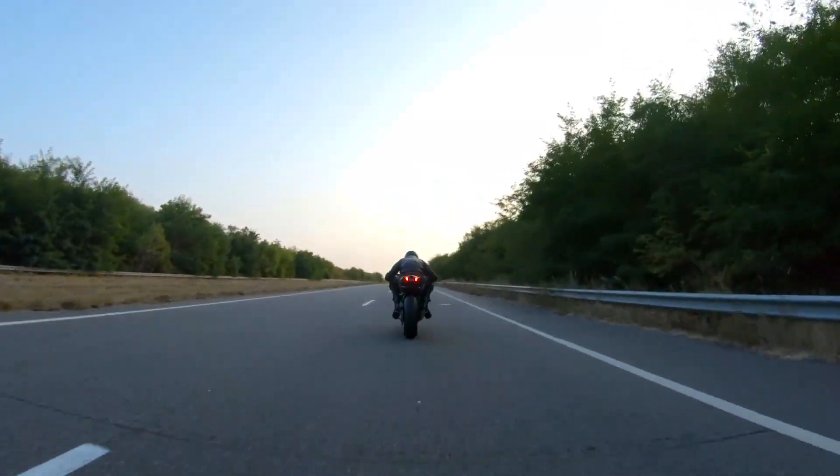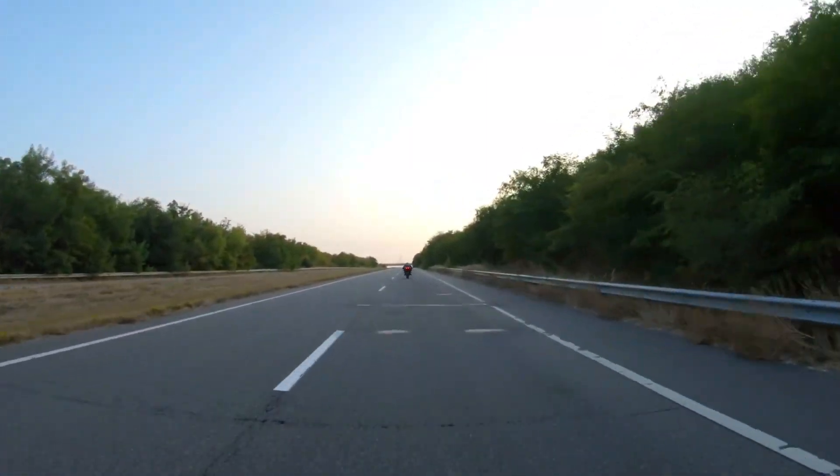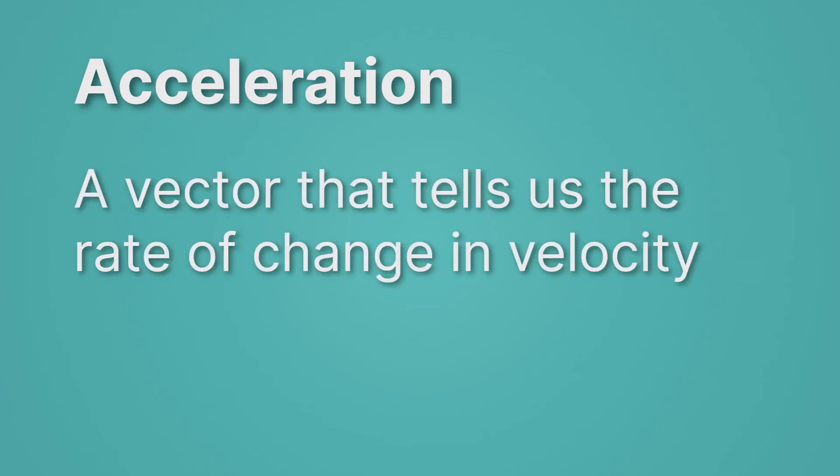Now that's acceleration — a change of speed, getting faster. When we think about the definition of acceleration, we have to remember that it's a vector — a vector that tells us the rate of change in velocity. We'll remember that a vector is just something with a direction. So, for example, we could accelerate forward or backward or to the right or to the left. It has a direction.